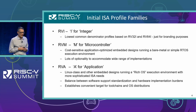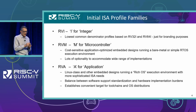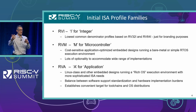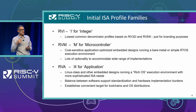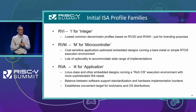Part of the point of all this is to establish a convenient target for toolchains and OS distributions. Instead of having all these compile flags for different extensions, if you just have a flag for RVA that implies a whole bunch of things. Similarly, OS distros may choose to target all their software for the RVA profile, creating a basis of commonality for everyone in the software ecosystem.